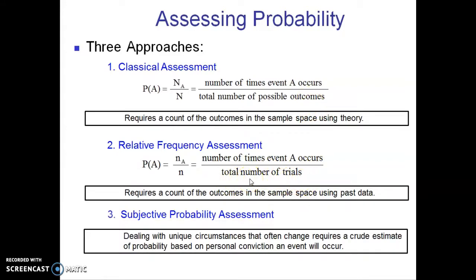The third type of assessment is subjective. This is dealing with unique circumstances that often change and require a crude estimate of probability based on a personal conviction that an event will occur. This is the least scientific of the three, but maybe the most practical. We're forced every day to assess the probability of things happening just to protect ourselves from danger. For example, if you text while driving on the freeway, you know the probability of getting in an accident goes up. You don't need a classical or relative frequency assessment to make that judgment and a better decision. If you go out and play golf in a thunderstorm, you know that the odds of being electrocuted by lightning go up compared to playing golf during a nice sunny day. So subjective probability is useful for everyday decision-making.